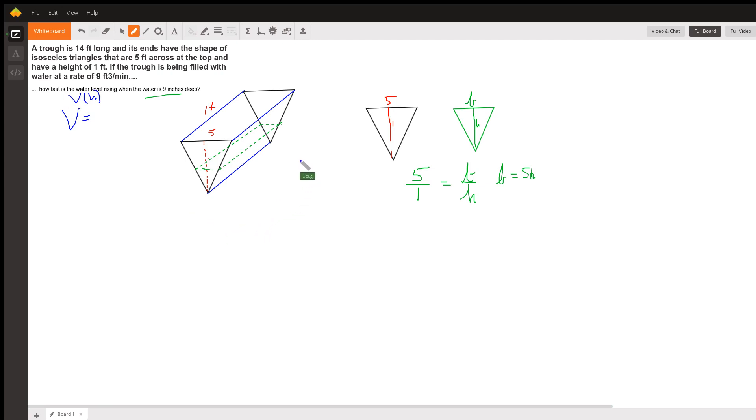And the key is setting up a formula for that volume is based on the area of the base times the length because it's a prism.